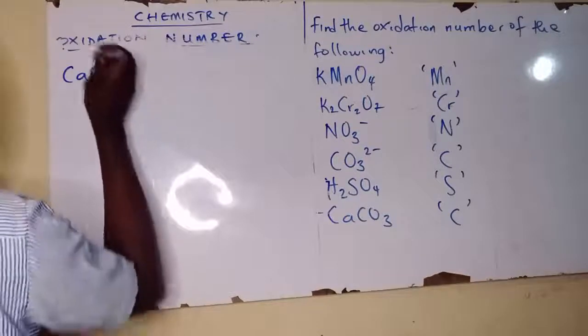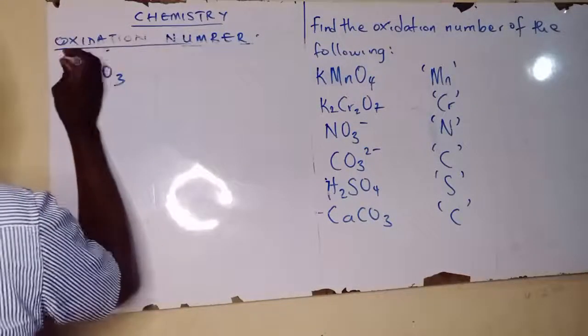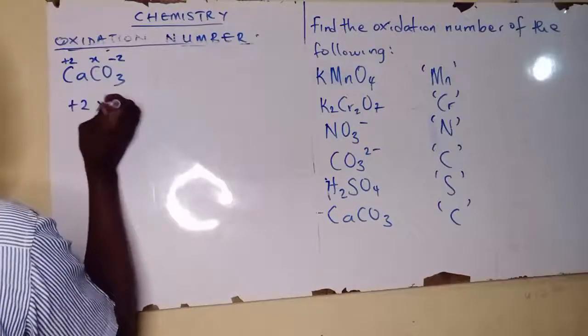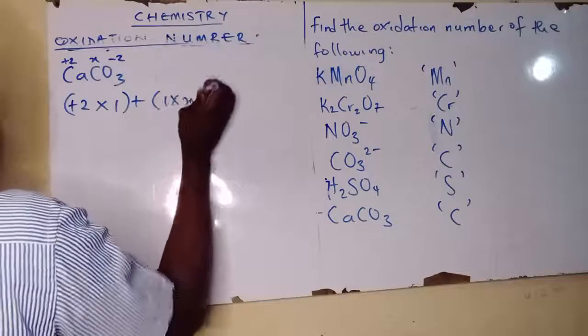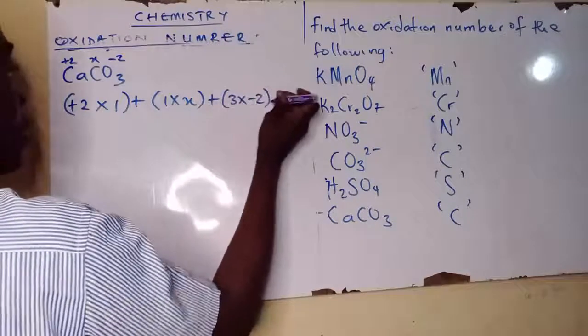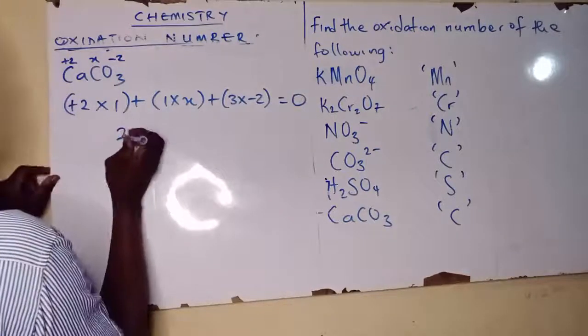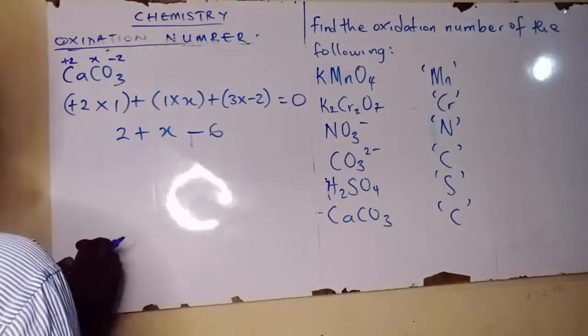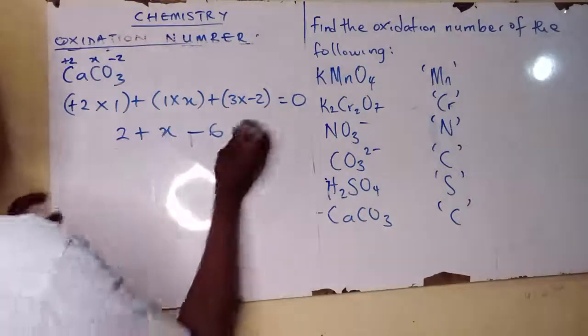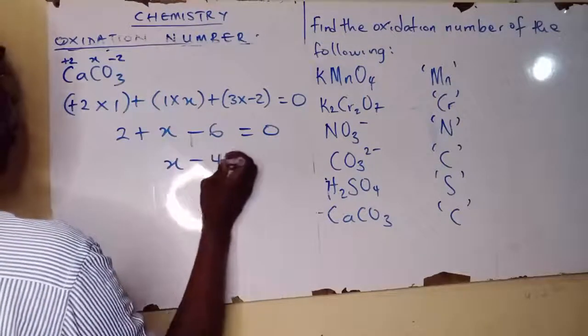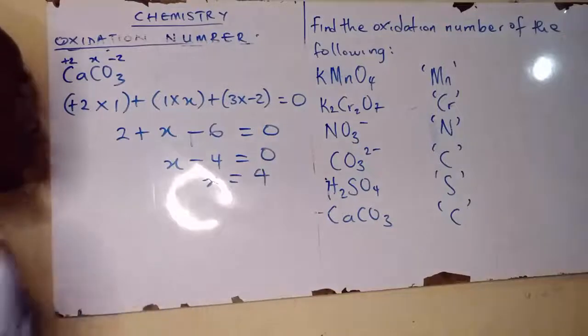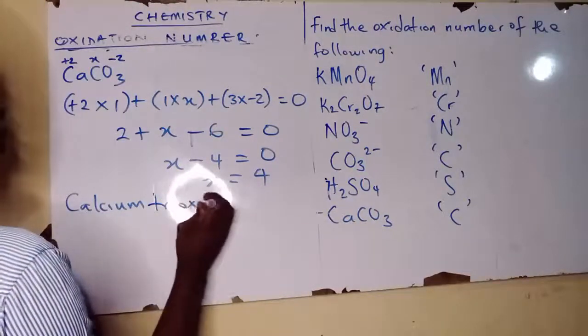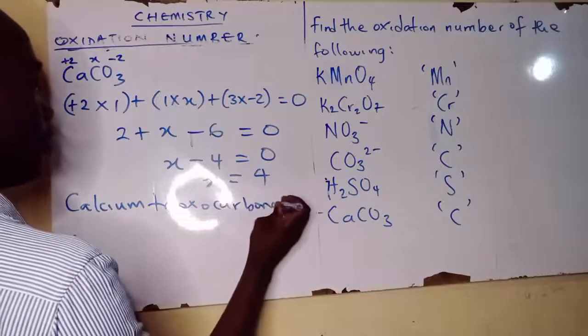CaCO3. Calcium is plus 2, carbon we don't know, oxygen is minus 2. So plus 2 times 1 for calcium, 1 times x for carbon, 3 times minus 2 for oxygen equals to zero. 2 plus x minus 6 equals to zero. X minus 4 equals to zero. X equals to 4. So calcium carbonate, carbon is 4.